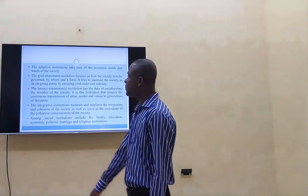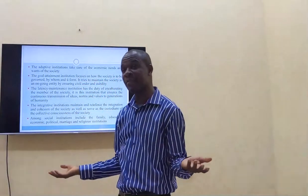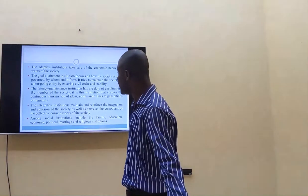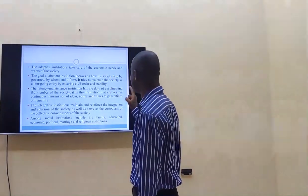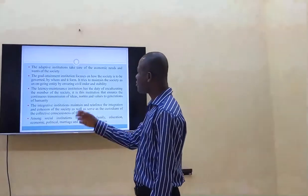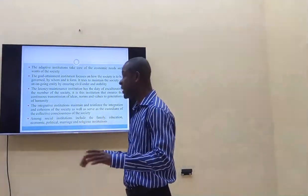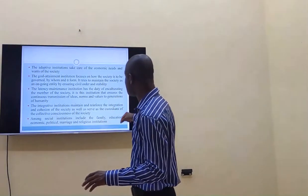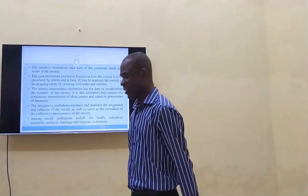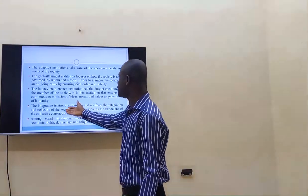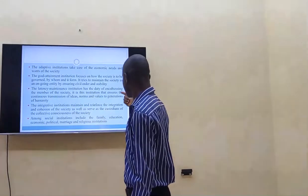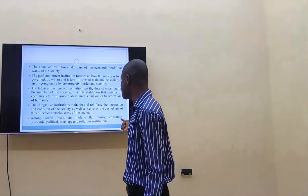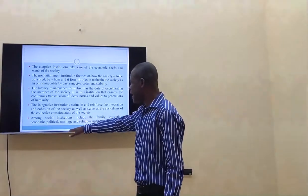Under the AGIL scheme: the Adaptive institution takes care of the economic needs and wants of the society. The Goal attainment function focuses on how the society is to be governed — that is politics. The Integrative function tries to maintain the society as a cohesive unit through the media and political aspects. The family institution ensures a continuous extension of norms and values to generations of humanity. The integrative institutions reinforce and maintain the cohesion of the society and serve as custodians of the collective consciousness.